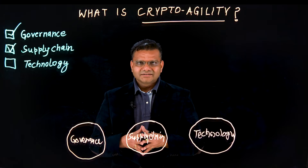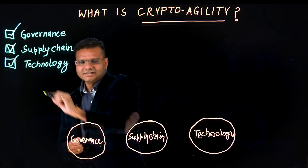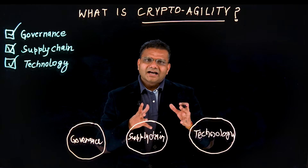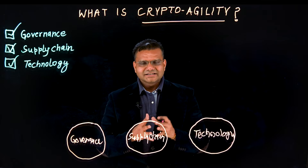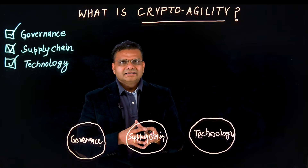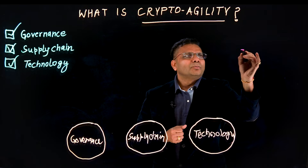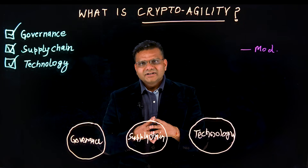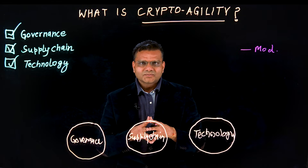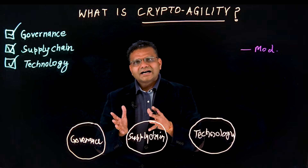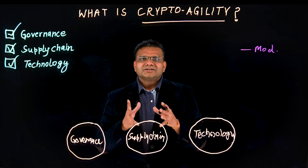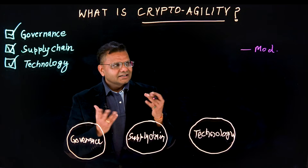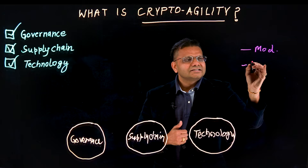The last component of the framework is technology. Cryptography functions should be separated from hard coding into each of the organization's networks, applications, and systems. This is one of the key requirements, called modularity. Modularity means that every time you need to replace a cryptography scheme or algorithm, you should not need to shut down your entire organization — rather, you should be able to quickly adopt new algorithms and run seamlessly. The other important capability is abstraction.